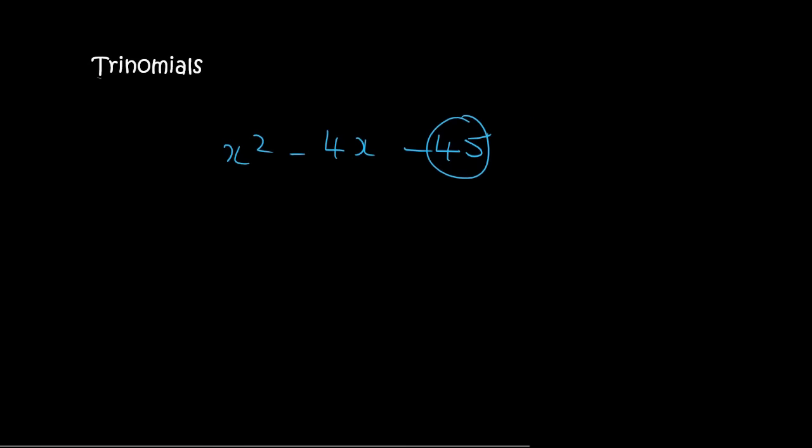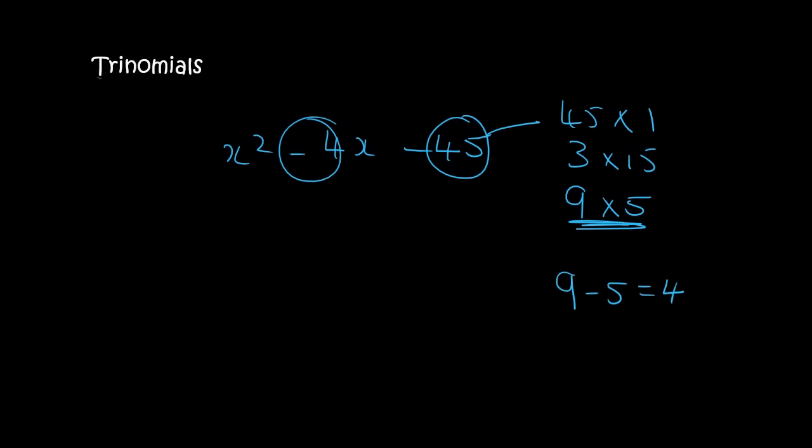Okay. So, with this one, we look at the number 45, and we say that that's 45 times 1, 3 times 15, and 9 times 5. So, we know that 9 and 5 could make minus 4. How? Well, if we said 9 minus 5, that's positive 4. We don't want that. But, if we switch it around, then you get minus 4, and that's what you want. So, you open up your two brackets, and you get x and x. The 5 is positive, and the 9 is negative.